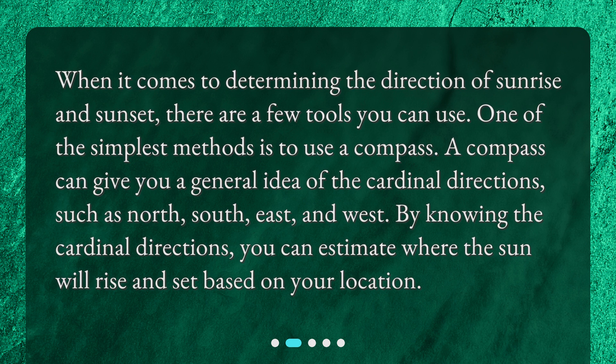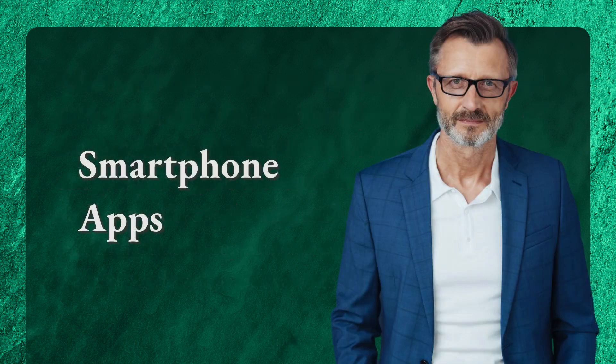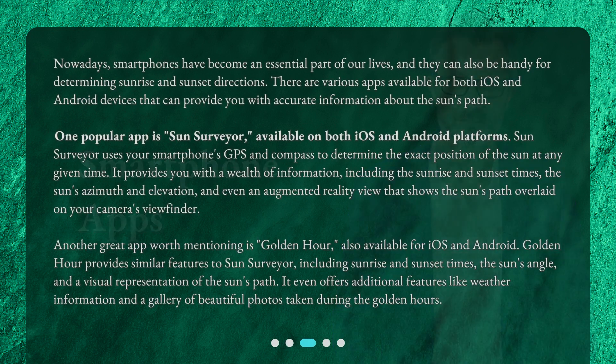Nowadays, smartphones have become an essential part of our lives, and they can also be handy for determining sunrise and sunset directions. There are various apps available for both iOS and Android devices that can provide you with accurate information about the sun's path.